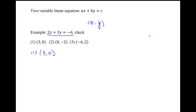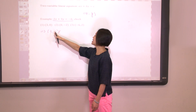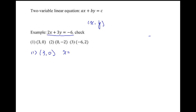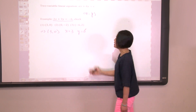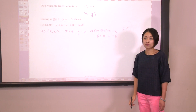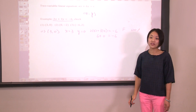Starting with the first ordered pair, (3, 0). Recall that for an ordered pair the first number is the x-coordinate and the second is the y-coordinate, so this implies x equals 3 and y equals 0. Plugging in, the left-hand side is 2 times 3 plus 3 times 0, which gives 6 plus 0 equals negative 6. That is false, so (3, 0) is not a solution of this linear equation.